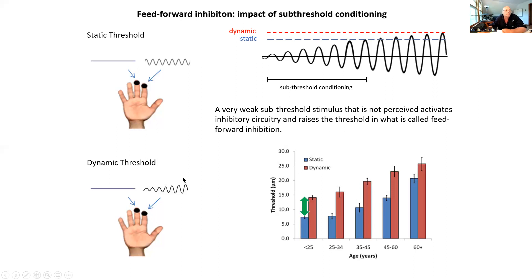Dynamic threshold, on the other hand, is slightly different from static threshold. You can tell it starts out very, very small where you can't feel it, and the stimulus grows until you can perceive it. That value is much larger than the static value. This is a result of sub-threshold conditioning. When you're delivering a sub-threshold stimulus — smaller than you can perceive — long enough before the test, you're basically conditioning the brain so that it can no longer detect the stimulus. It requires a much larger stimulus to feel. The dynamic threshold is higher than the static.